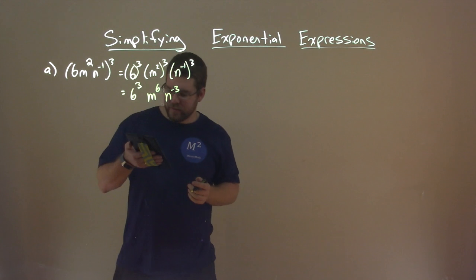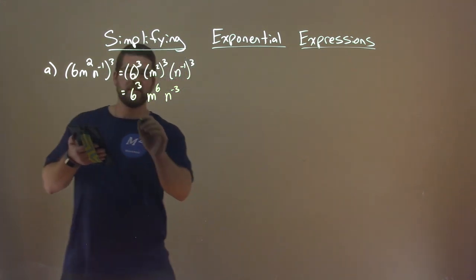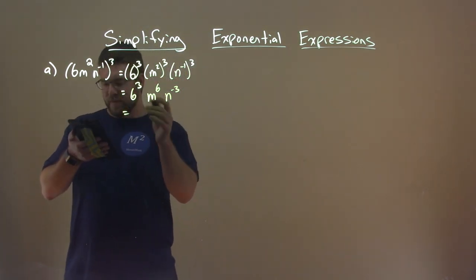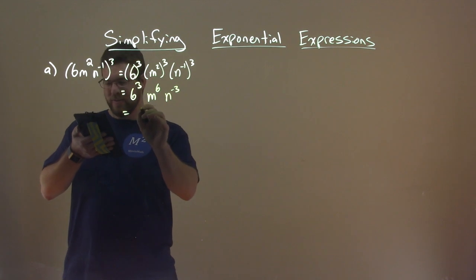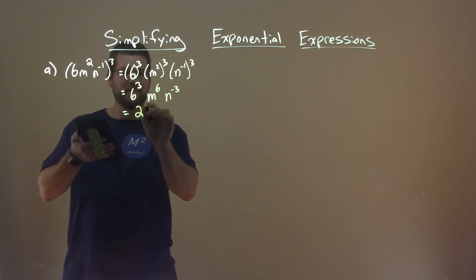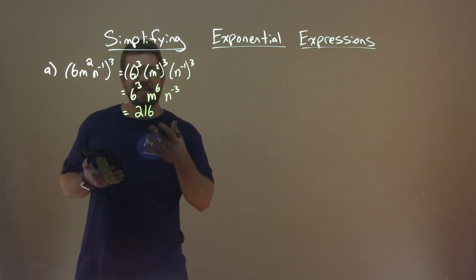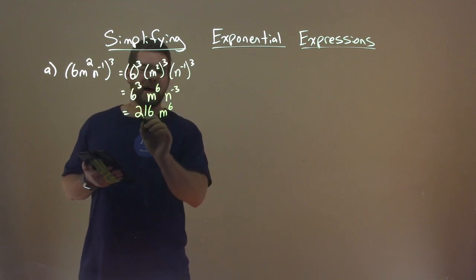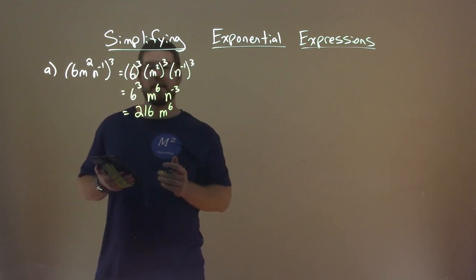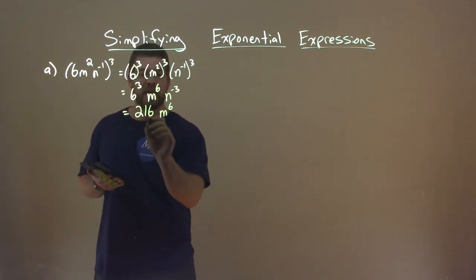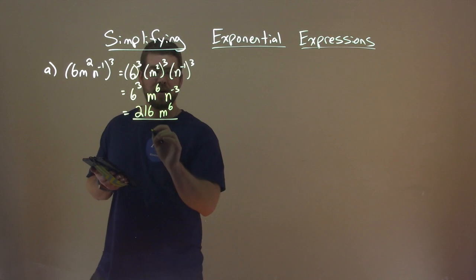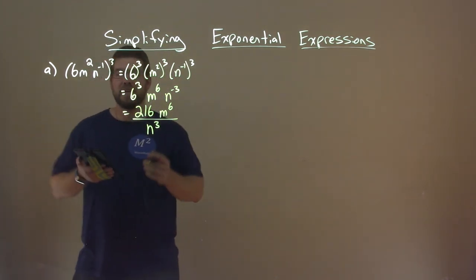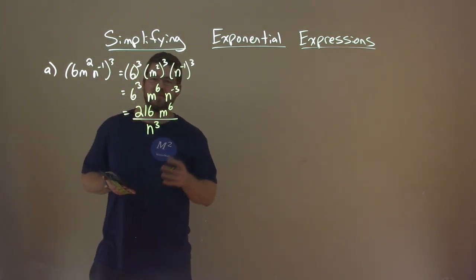From there, we can simplify a little bit more. Remember, 6 to the third power is 216, m to the sixth really can't simplify anymore, but we have n to the negative 3rd power. Bring that down to the denominator and we have n to the positive 3rd power. And there we have our answer — not too bad.